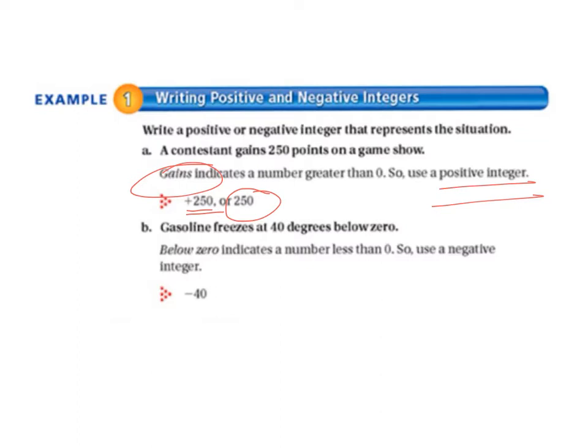Letter B, gasoline freezes at 40 degrees below zero. Below zero indicates a number less than 0, so we would use a negative integer, negative 40.